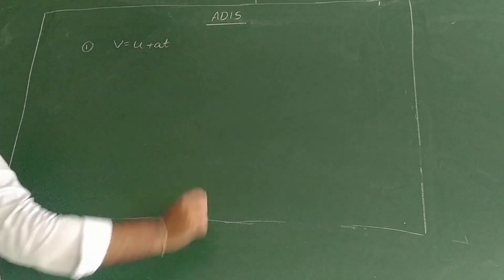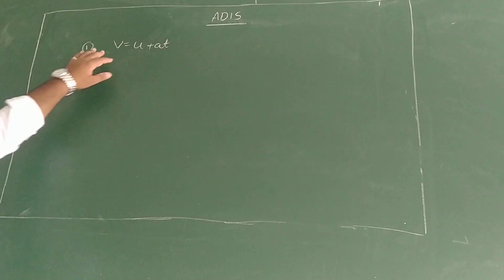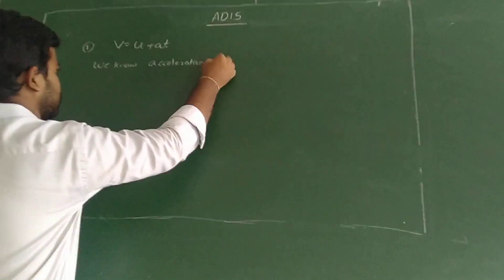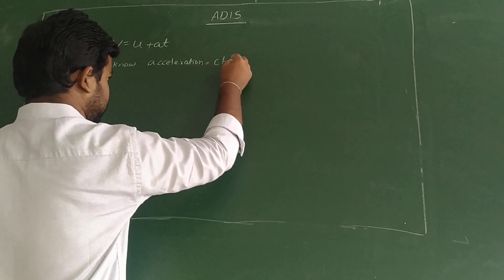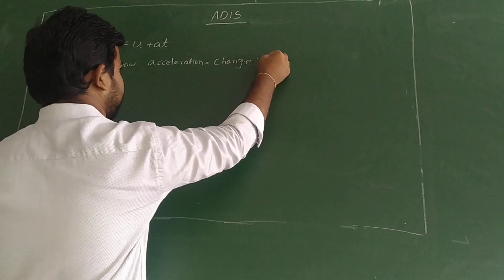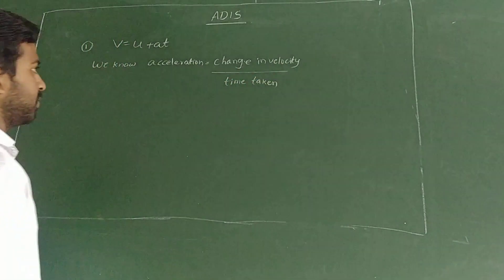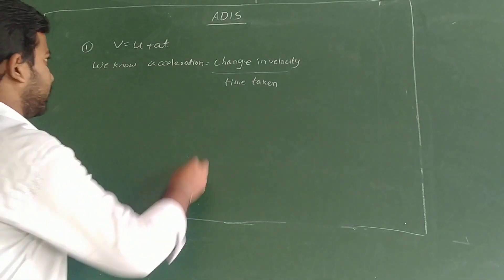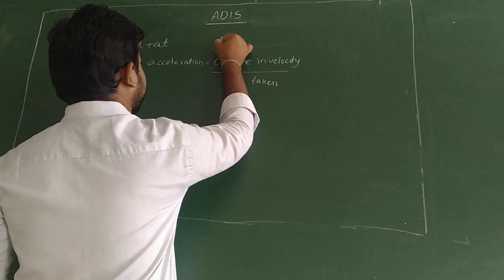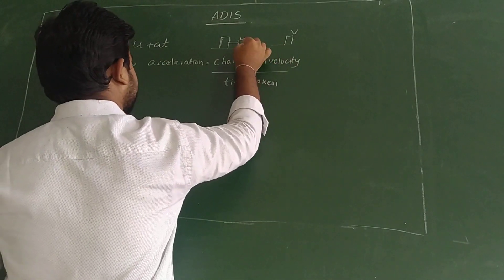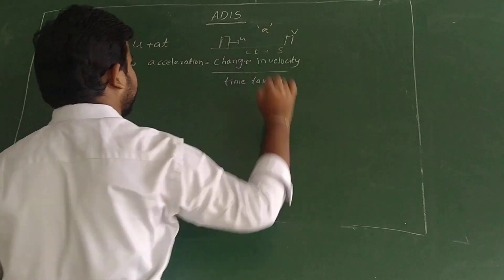First equation: v = u + at. To derive this, we know acceleration equals change in velocity divided by time, that is a = (v - u) / t. Whenever an object moves with initial velocity u and after some time t acquires final velocity v, this is the velocity-time relation. Rearranging gives v - u = at, so v = u + at.